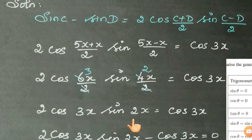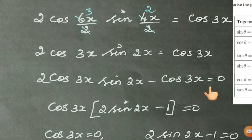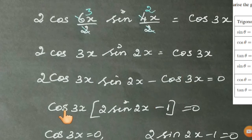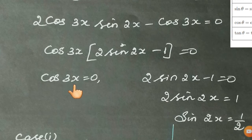We have 2 cos 3x sin 2x equals cos 3x. Bring cos 3x to the left-hand side: 2 cos 3x sin 2x minus cos 3x equals 0. Observe that cos 3x is common in both terms, so bring it outside.